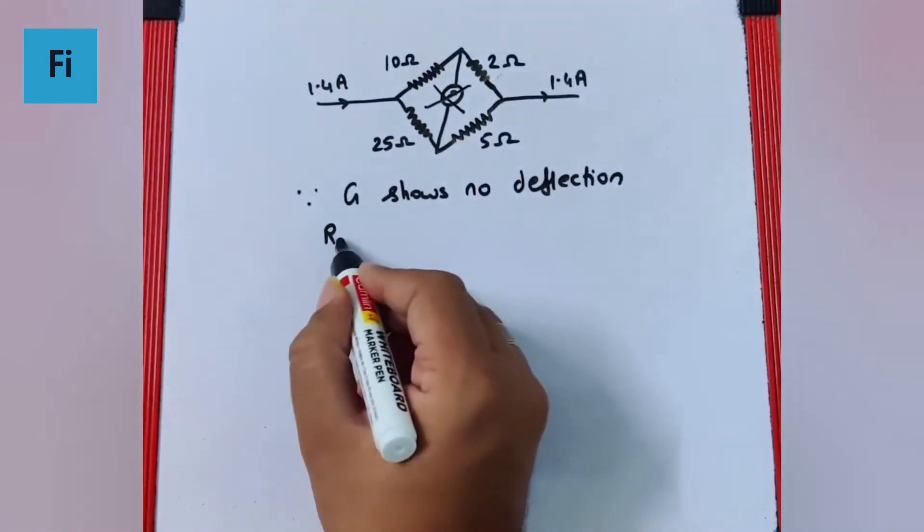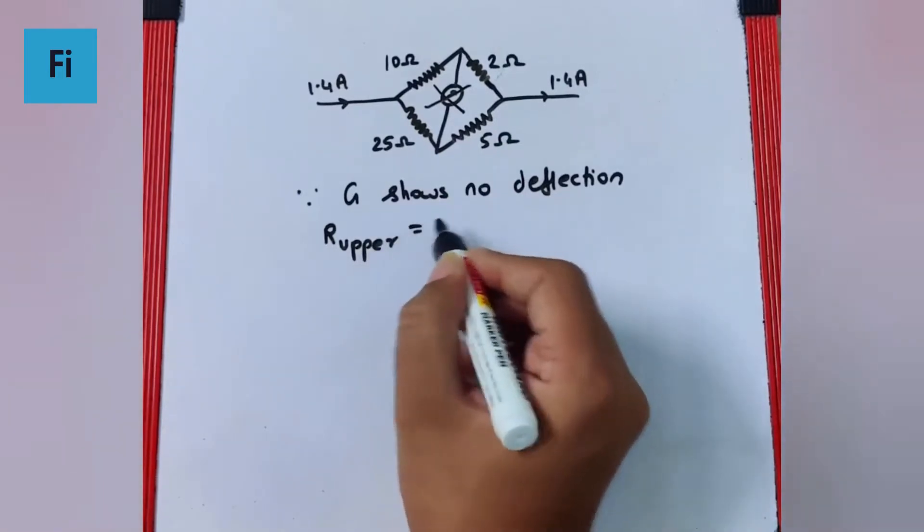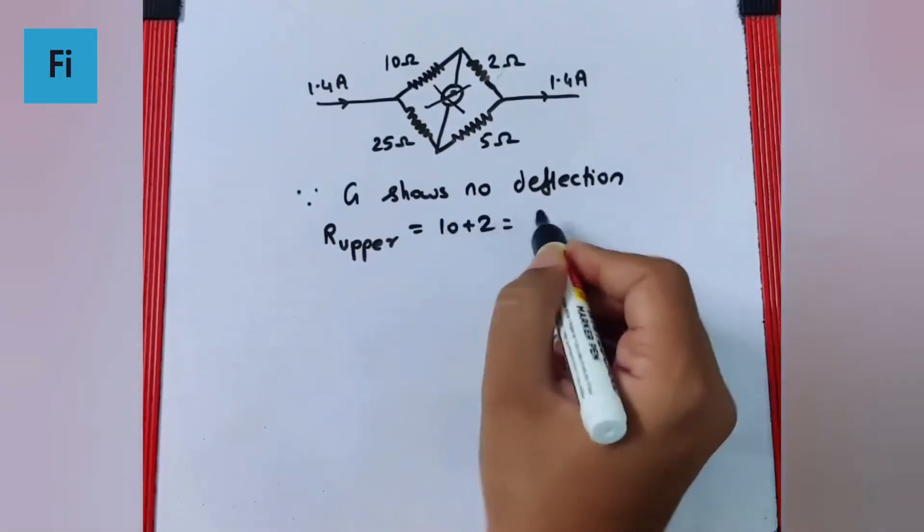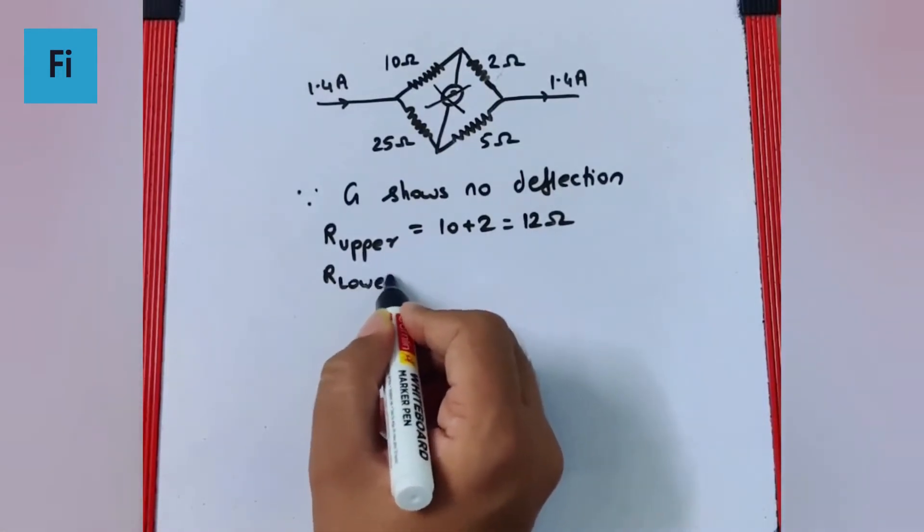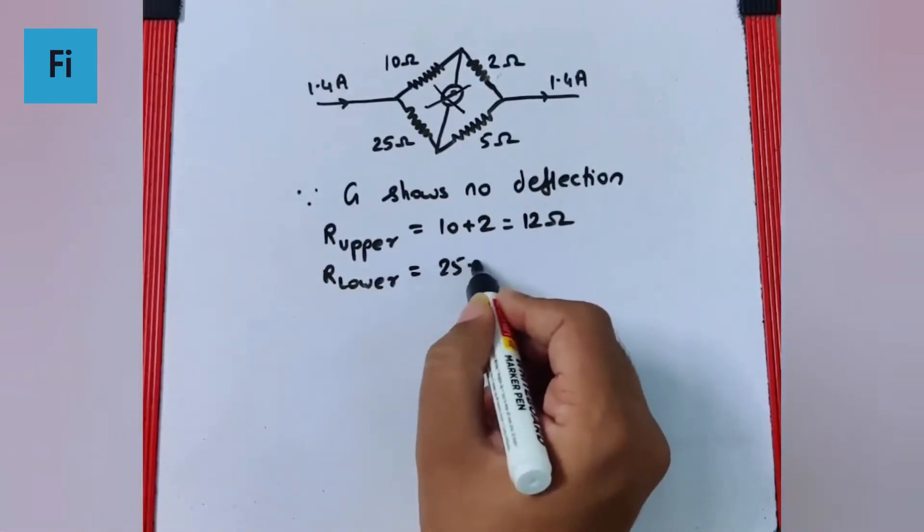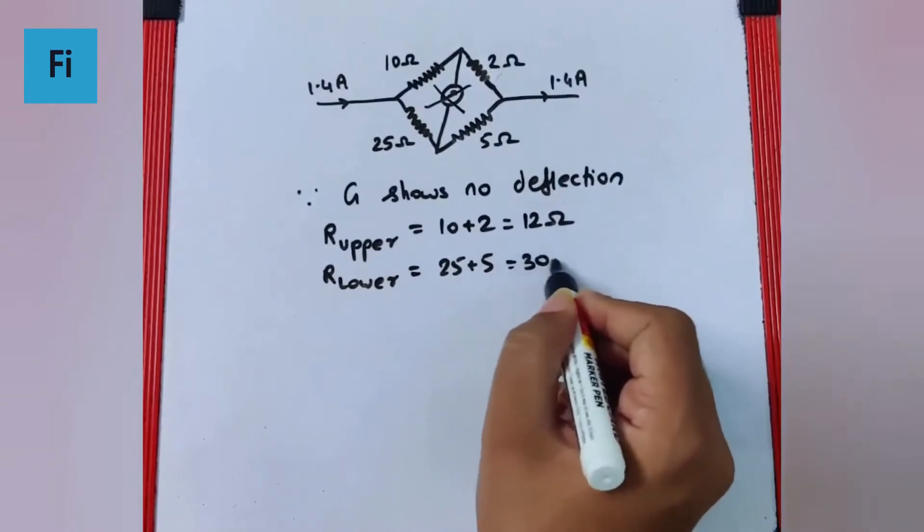the R upper branch is going to be 10 plus 2, that is 12 ohm, and R for lower branch is 25 plus 5, 30 ohm.